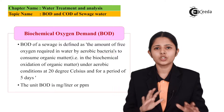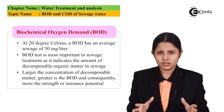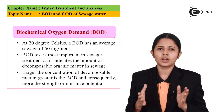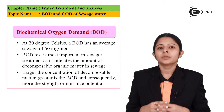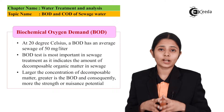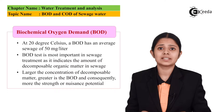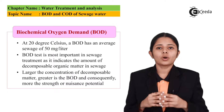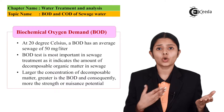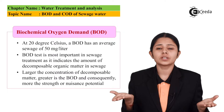For an average sewage at 20 degrees Celsius, BOD can be around 50 mg per litre. BOD is one of the most important parameters because it actually indicates the amount of organic matter present in that sewage. Larger the concentration of the decomposable matter, greater the BOD and consequently greater the strength or the nuisance potential.